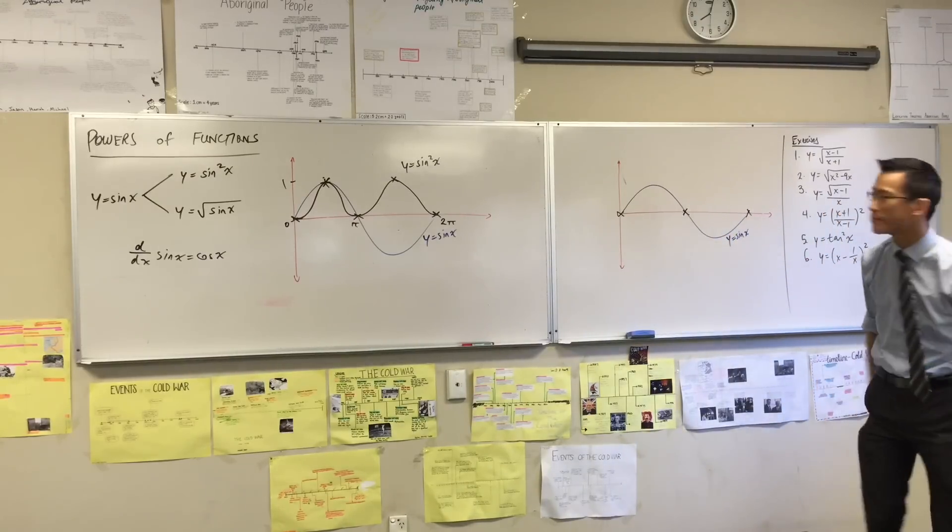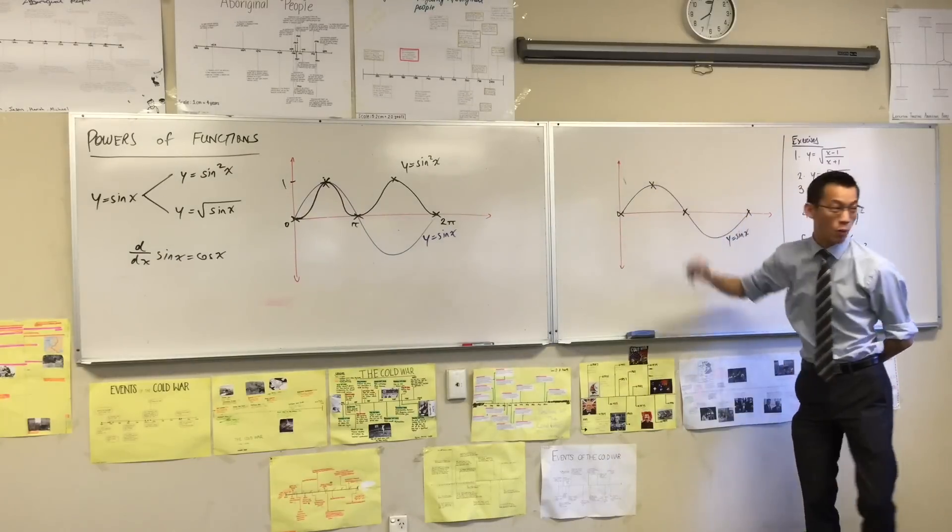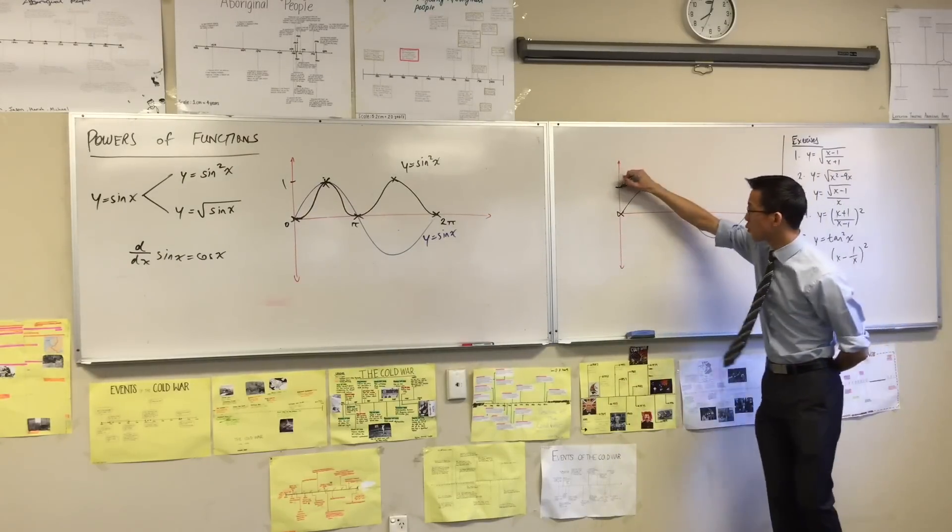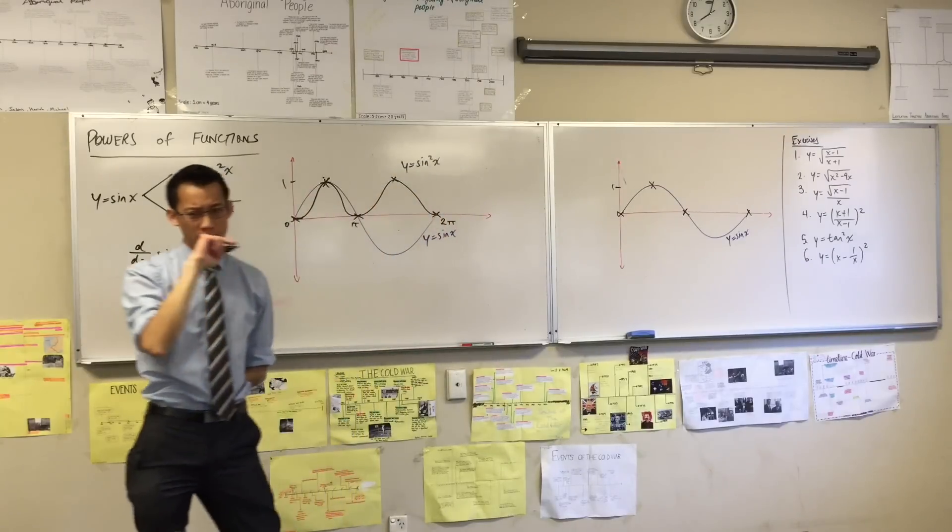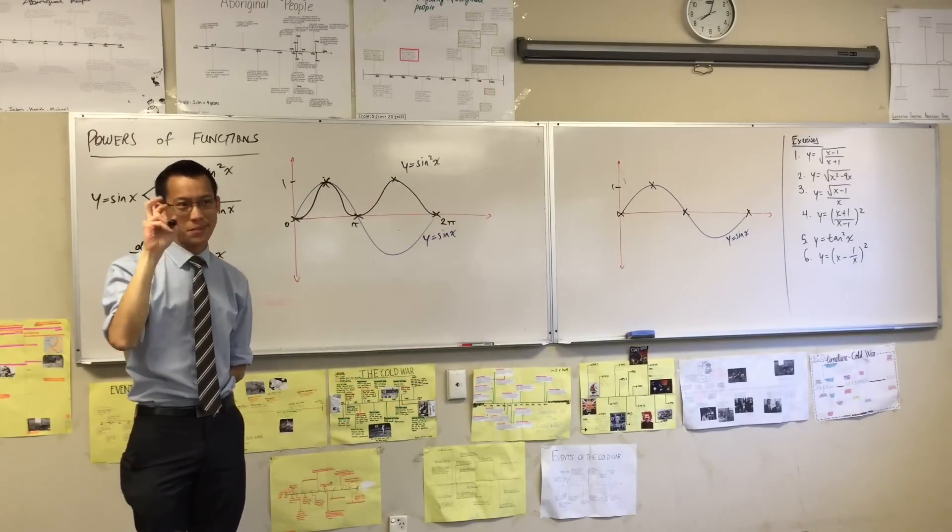What else? At x equals π/2, you get y equals 1, and the square root of 1 is still 1. Okay, so far so good. On my analysis, I have no other important points to notice.